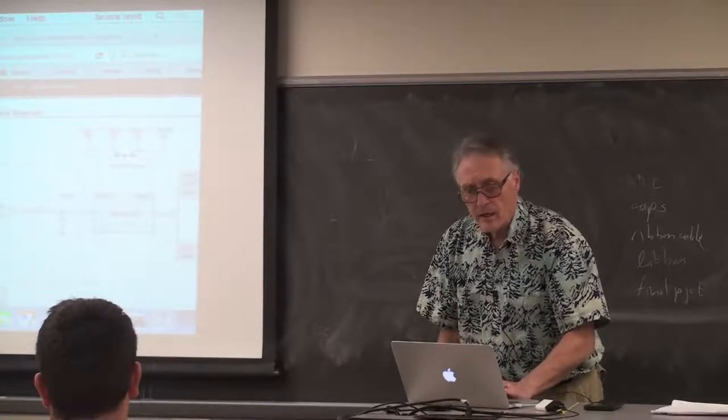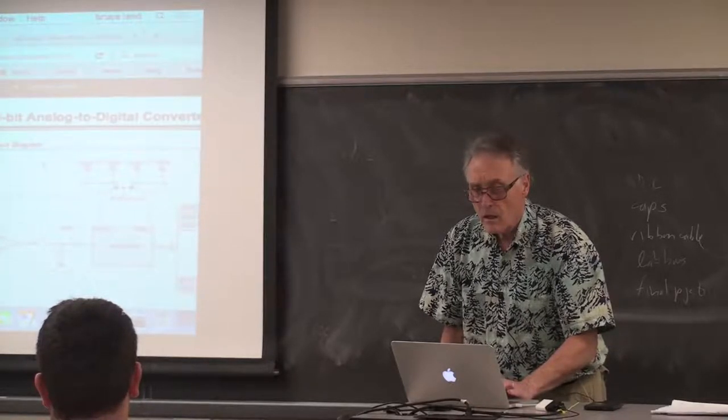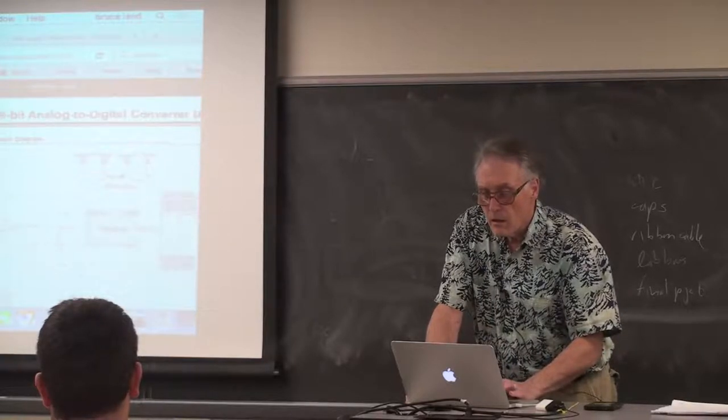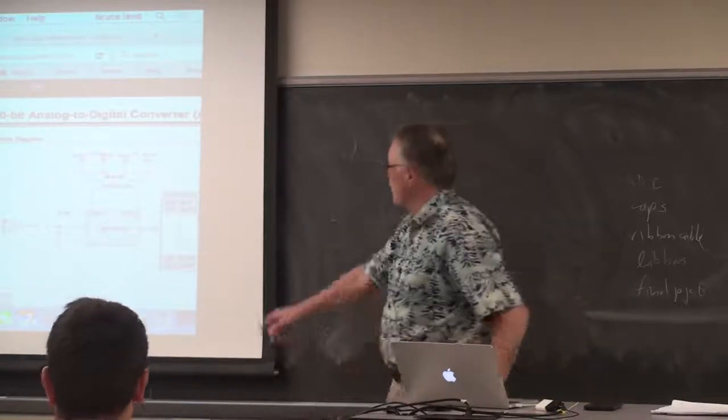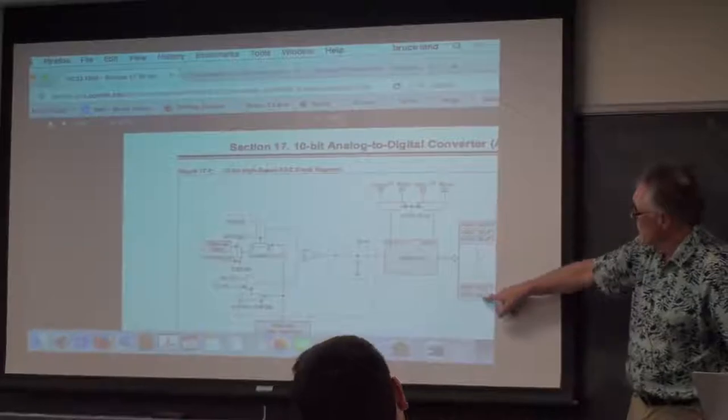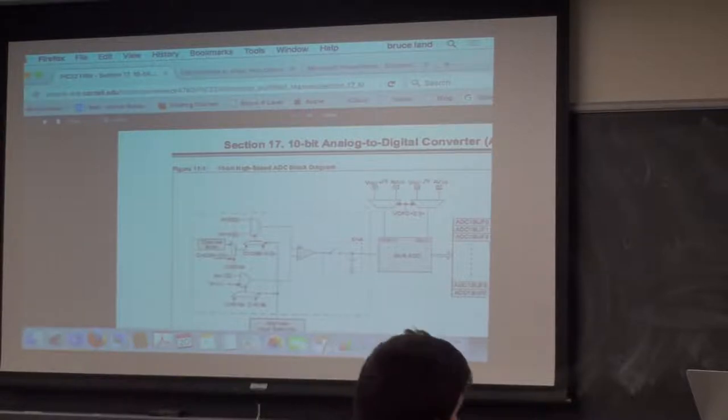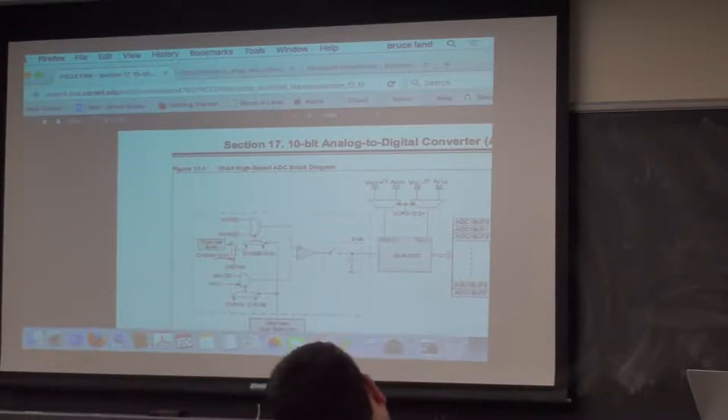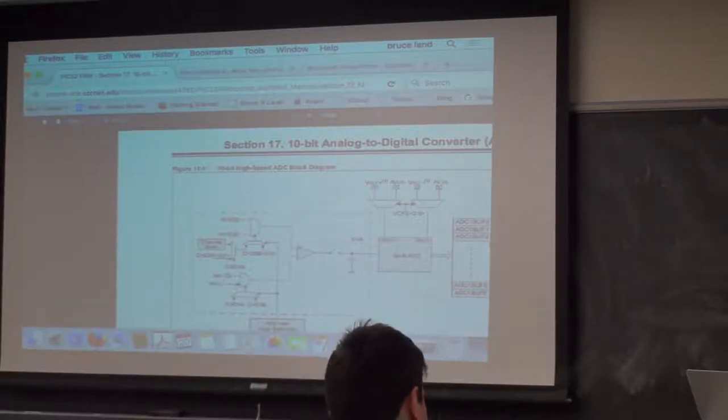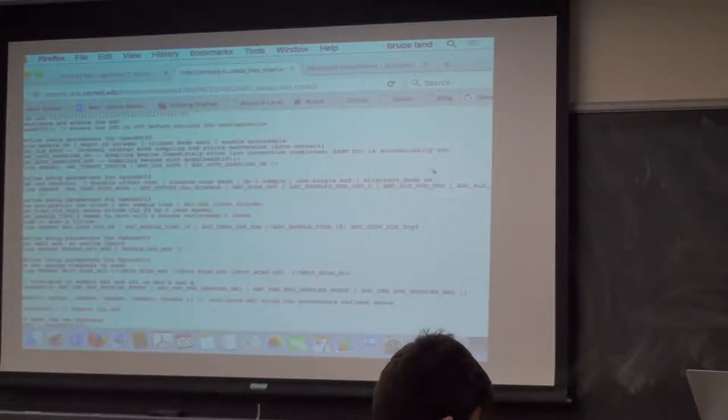So the output of the A to D converter goes into a stack over here, or a list of buffers. And there's actually two sets of buffers so that you can read one and write the other from the A to D converter. But we're going to turn that off so that we're always reading from ADC buffer 0 and 1. So we're setting the alternate buffer off.